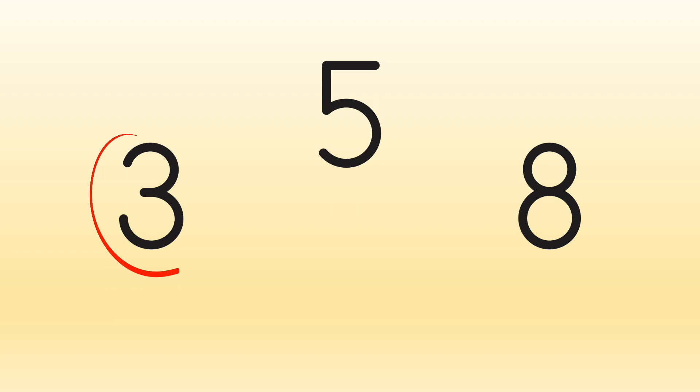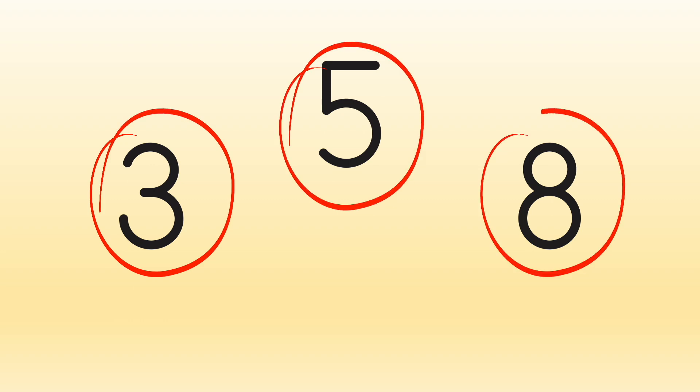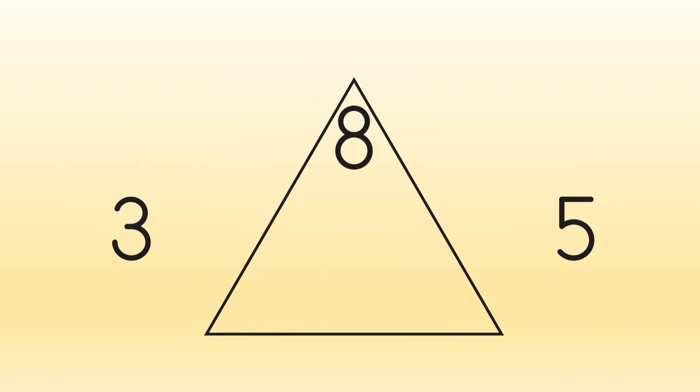Let's use the numbers 3, 5, and 8. These three numbers are an example of a fact family. So, 8 goes to the top, and 3 and 5 go to the bottom.